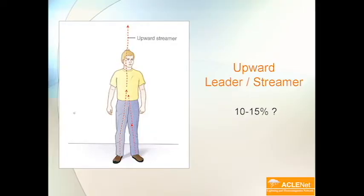There are upward streamers coming up from all kinds of objects, and lightning may eventually connect with one or more of those upward streamers. Well, that energy that's coming up through you, even if it doesn't connect with the lightning, is still strong enough to cause significant injury.